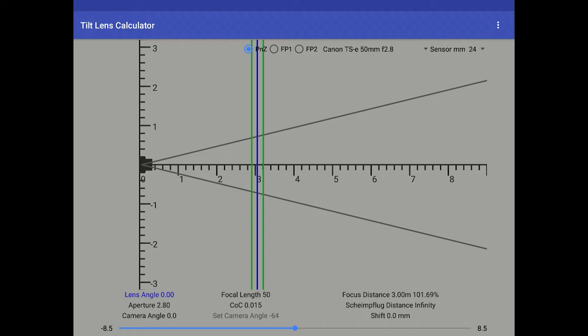There are two diagonal lines leading away from the camera. This represents the field of view. There are three vertical lines, two green, one blue. The blue represents the focal plane. The green represent the near point of focus and far points of focus accordingly.